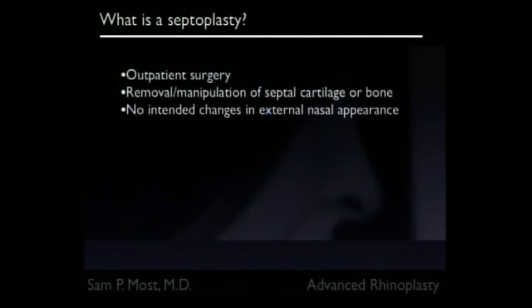So what is a septoplasty? It's an outpatient surgery with incisions only on the inside of the nose, where we remove or manipulate the septal cartilage or bone to make it straighter and improve the nasal airway. There are no intended changes in external nasal appearance. I can't tell you how many times patients come to me saying they've had a septoplasty and nothing else done, but of course they've really had a rhinoplasty — that was more commonly done in the 70s and 80s.